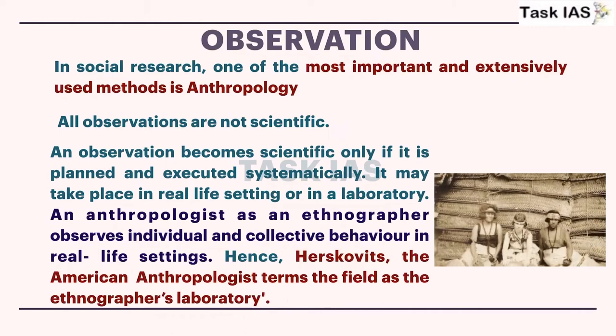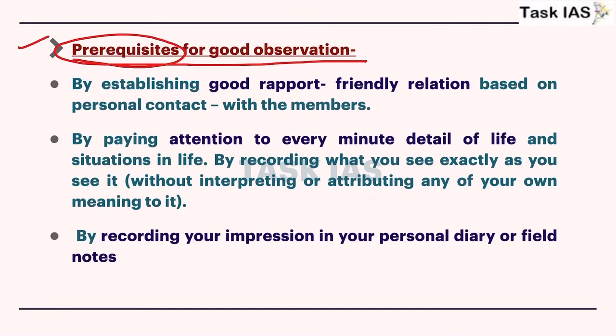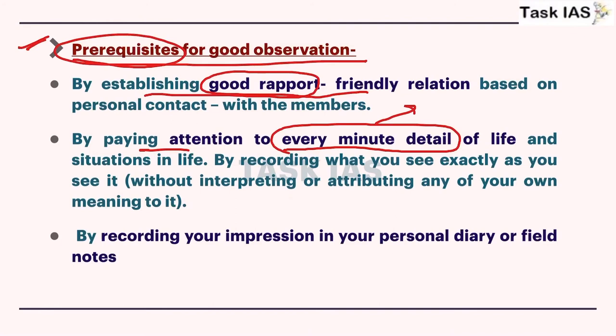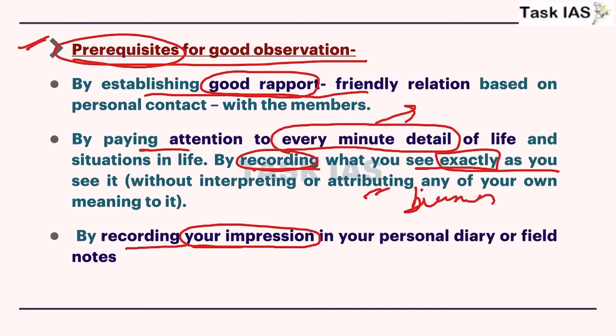Preconditions for good observation include: first, establish good rapport and friendly relations — that will help collect information without resistance from local people. Second, pay attention to every minute detail to have a thorough idea of any phenomenon you are observing, and record everything exactly as you see it to reduce your own biasness in collecting data. You can record your personal impressions in your personal diary or fieldwork notes, but you must clearly mark what is personal feeling versus objective statement.